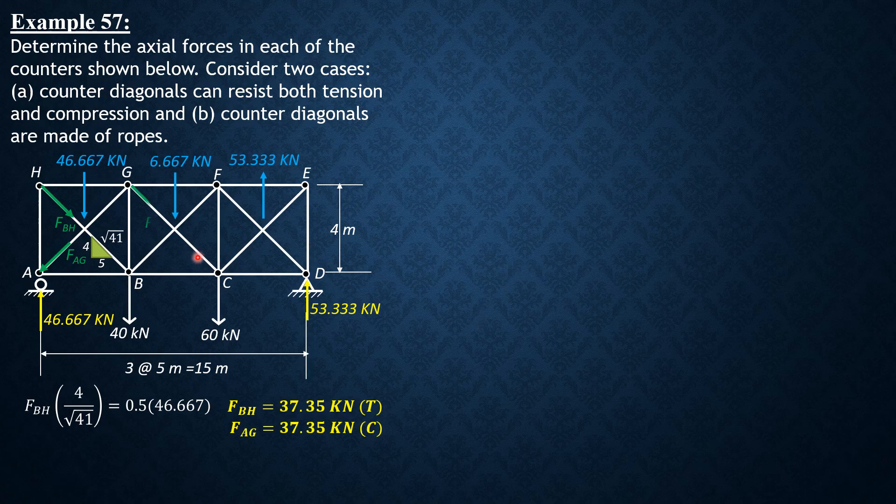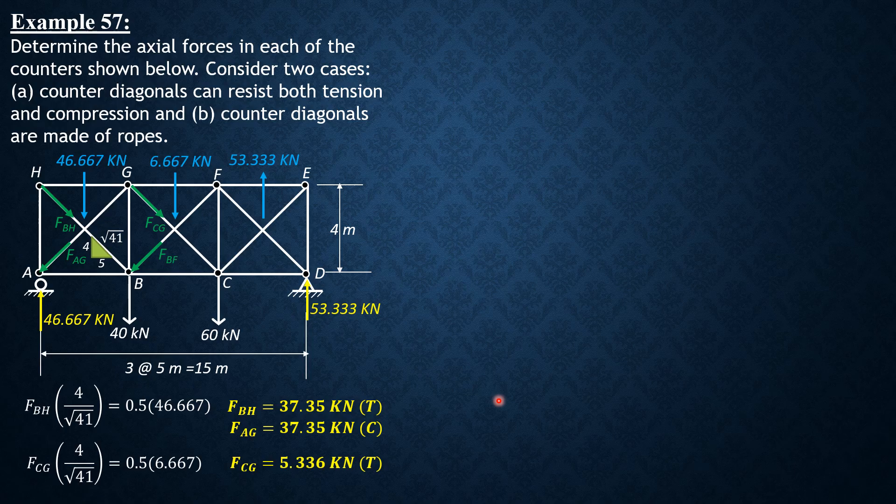We then proceed to panel BC. So FCG is tension, FBF is compression. So by assumption A, the vertical component of FCG, which is FCG times 4 over square root of 41, is equated to half the panel shear, 0.5 of 6.667. So we get FCG at 5.36 kN tension. Automatically by symmetry, FBF is 5.36 kN compression.